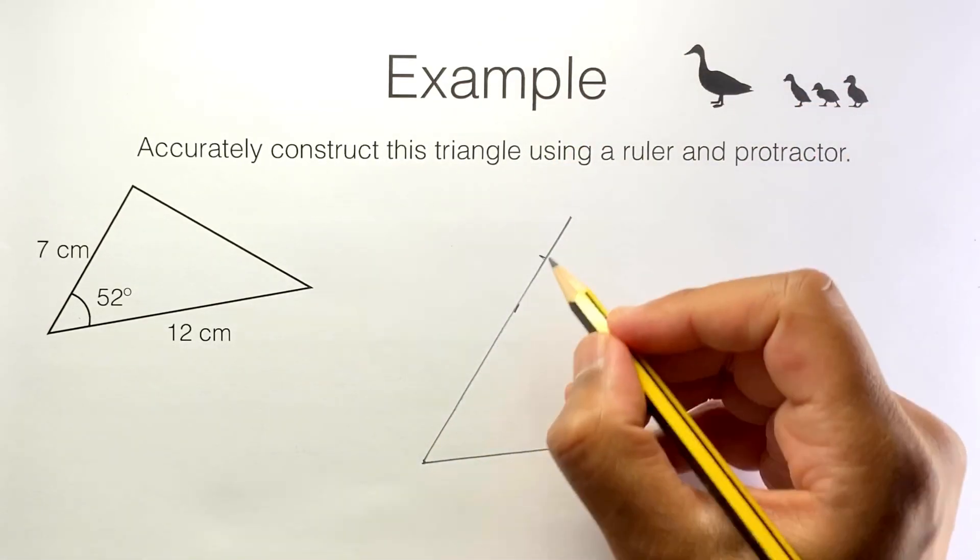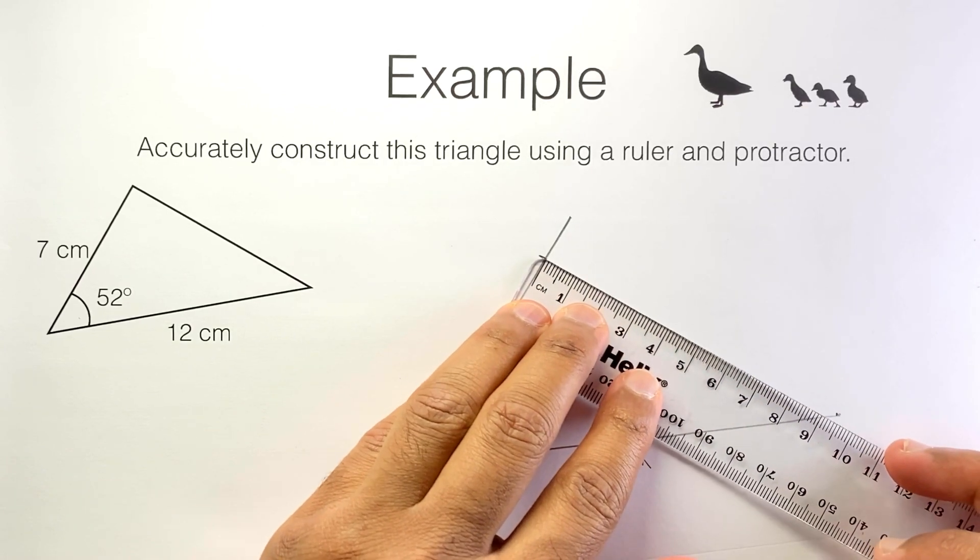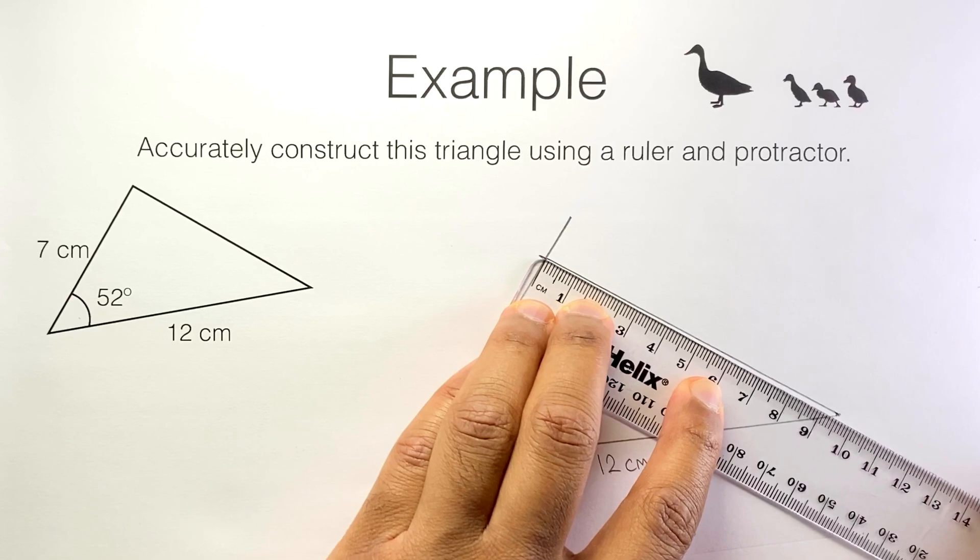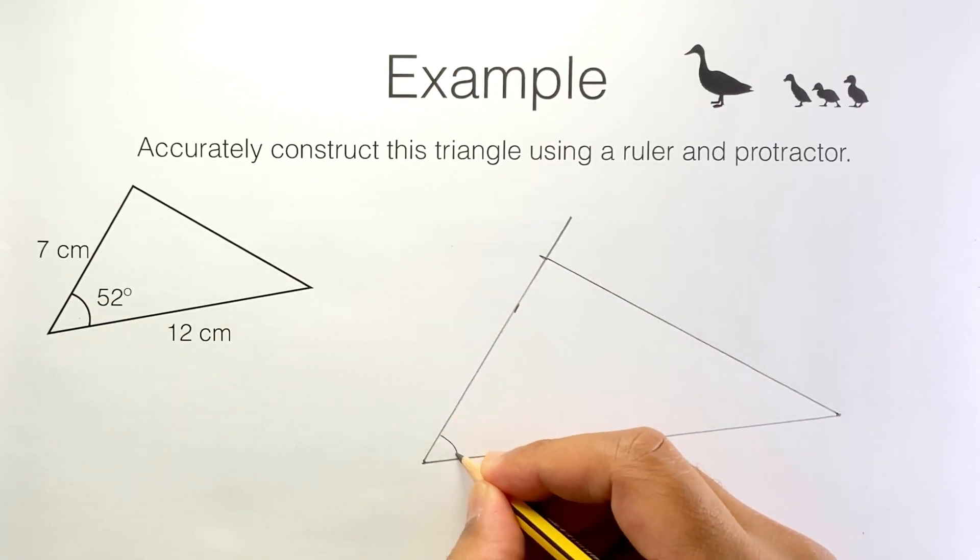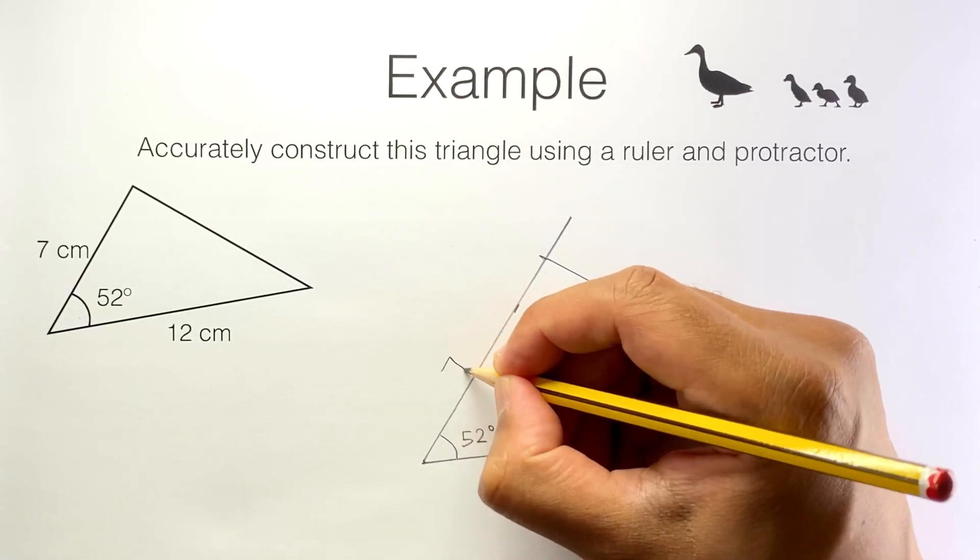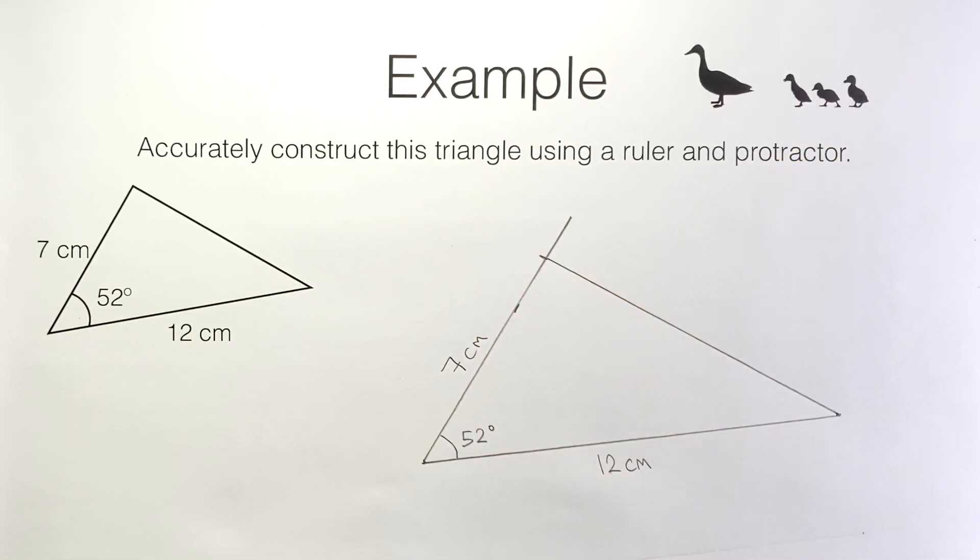Finally I can join that point I've marked to this end of the 12 centimetre line. And we are done. I'm just going to label the 52 degree angle and the seven centimetre side. And there's not much more I can do to this. Here we are.